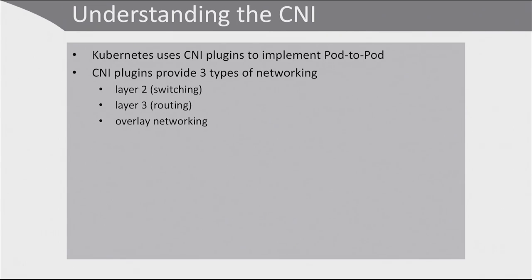In this lesson we are going to talk about pod to pod networking. In order to organize pod to pod networking there is the CNI. CNI provides plugins that implement pod to pod networking. These plugins can be used at three different levels to implement three different types of networking: there is layer 2 networking, which is the easiest solution based on switching; there is layer 3 networking, which is all about routing; and there can be overlay networking as well.